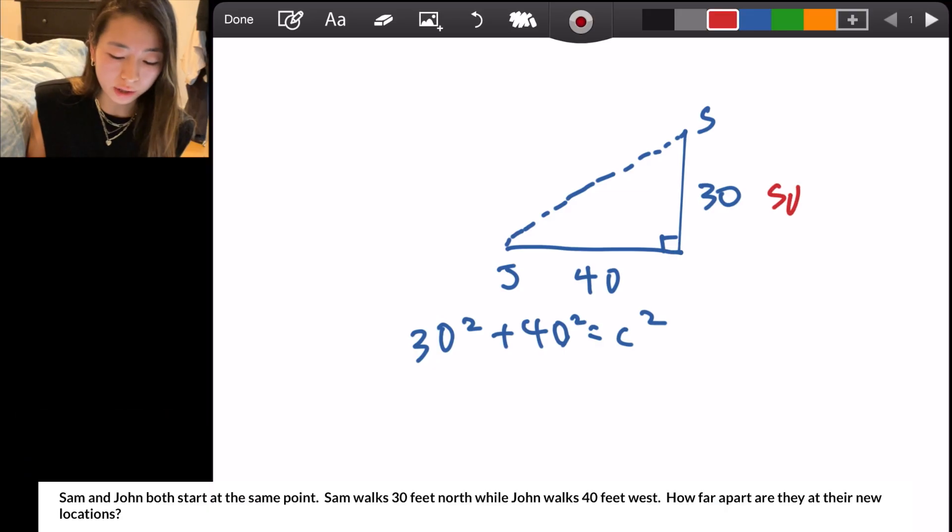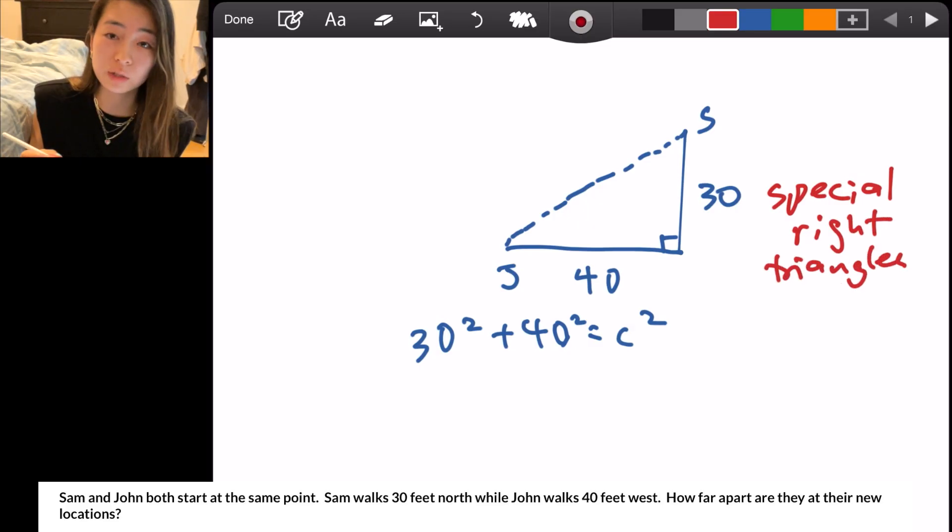Whenever we see right triangles, we want to look for special right triangles. Because of my practice and knowing special right triangles, which we'll review in a bit, I can already see that this is going to be a 3, 4, 5 triangle. How did I see that?